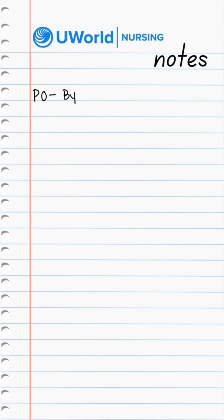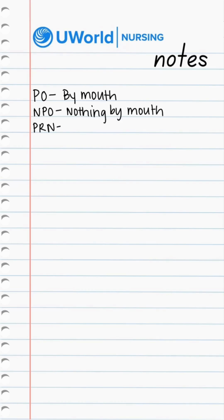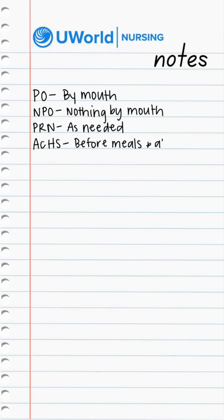PO means by mouth and is a route for medication administration. NPO means nothing by mouth and is used to describe nutritional status. PRN means as needed and is a frequency for medication. ACHS means before meals and at bedtime and is typically used for insulin administration.